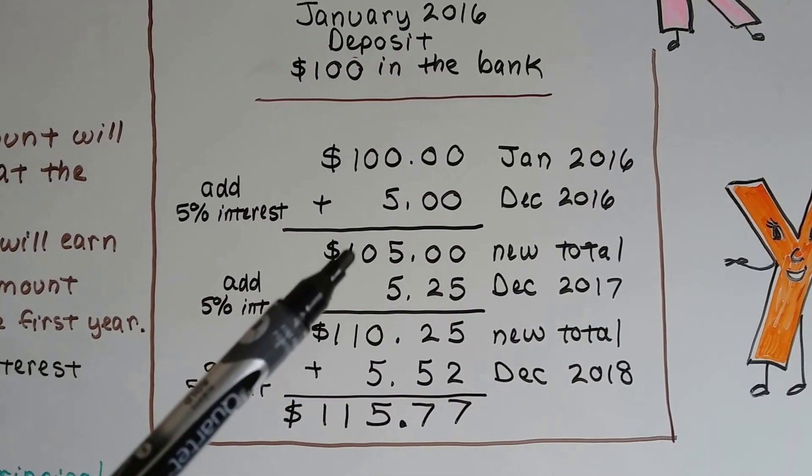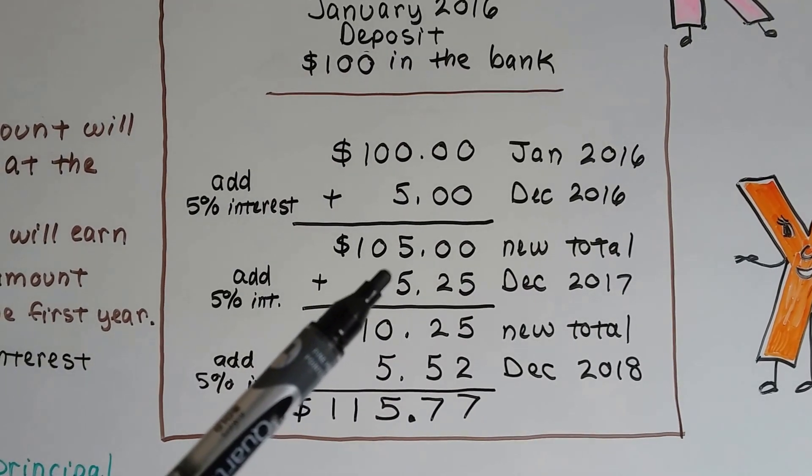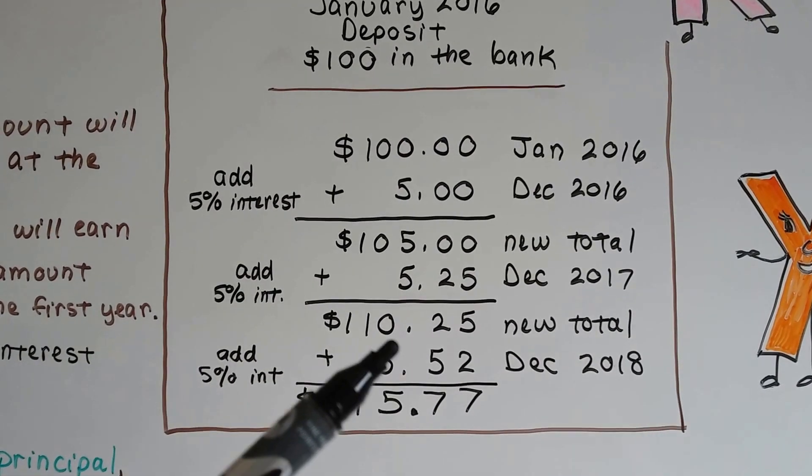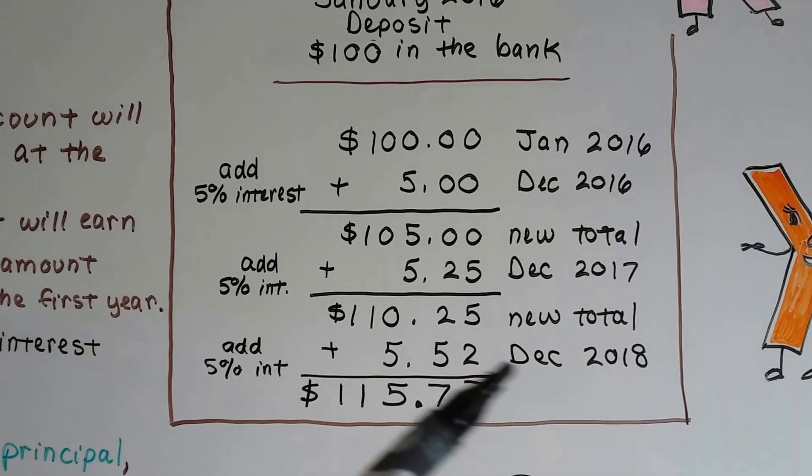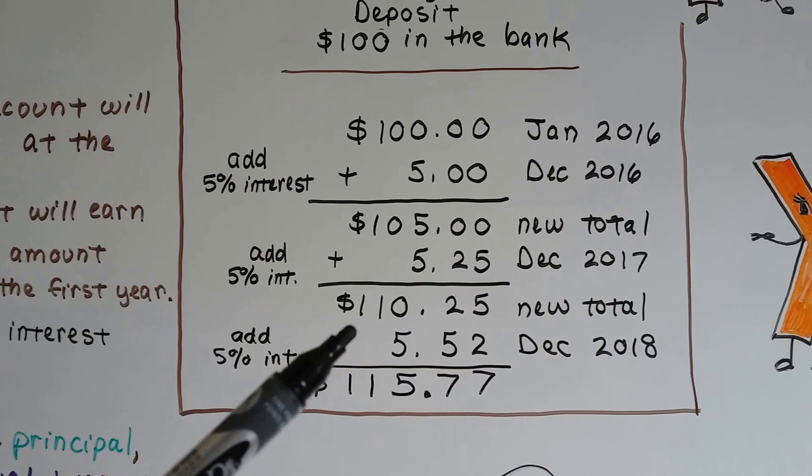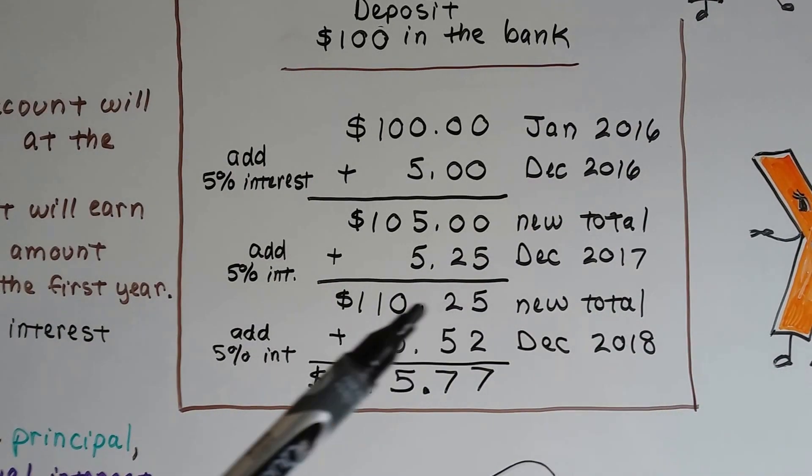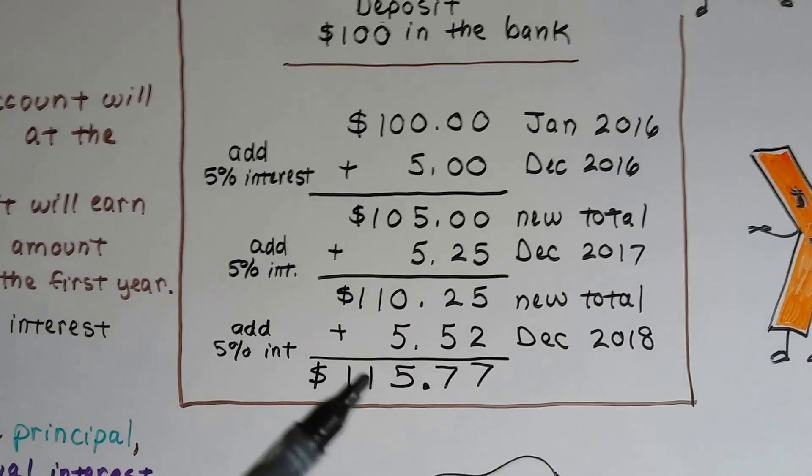Well, at the end of this year, December of 2017, they would add another 5% interest, but now because the starting amount is $105, the interest is $5.25. Then in another year, December of 2018, with another 5% interest added, now it's going to be added to $110.25, that amount after 2017. And now you've got this amount.